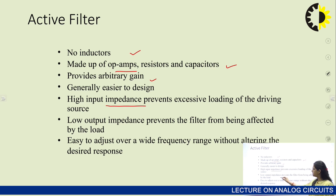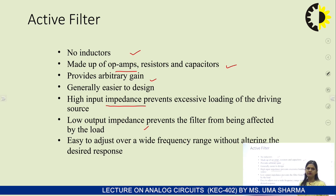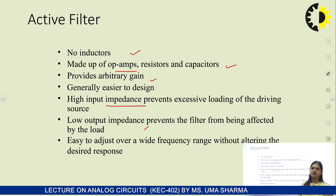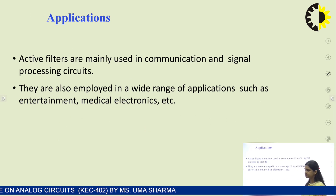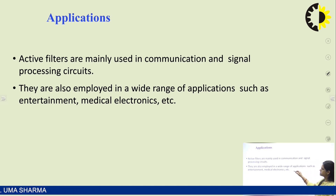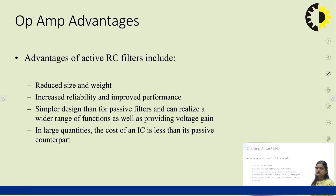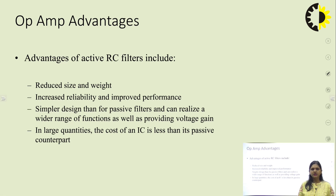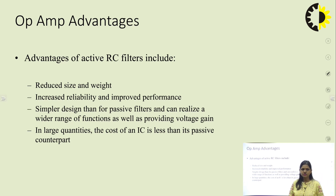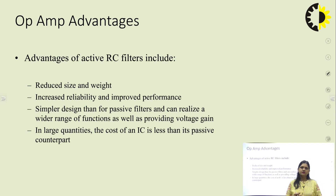We use the op-amp as the active element. Although we can use MOSFET and BJT, the op-amp is generally preferred because its gain is very high. Active filters provide gain, the design is very easy, and op-amp provides very high input impedance, preventing the loading effect. The circuit can also provide low output impedance, so the filter is less affected by the load. We can adjust the frequency range over a wide band. The use of op-amp reduces size and weight, increases reliability, and improves performance.